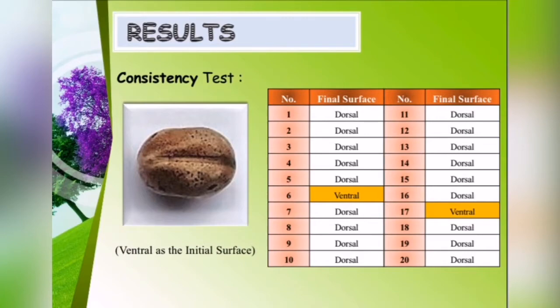For our second consistency test, with the ventral surface as the initial surface, only 2 out of the 20 samples were planted with the ventral surface on top.